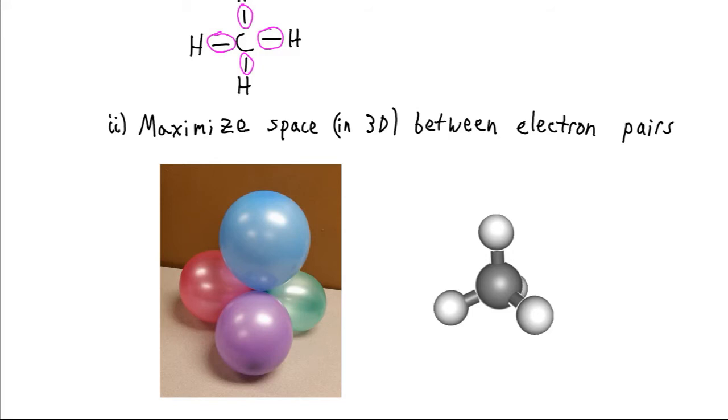Now our orbitals for our electrons are going to do the exact same thing. They're also going to want to maximize the amount of space available. And if there's four lobes for our electrons, just like for our balloons, then we'll get an identical shape. It's called a tetrahedral shape.